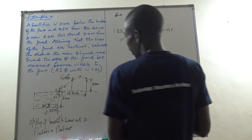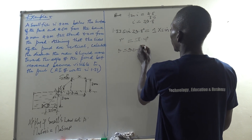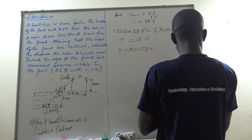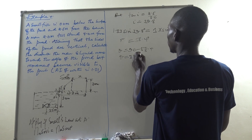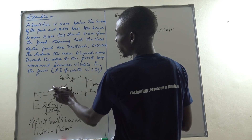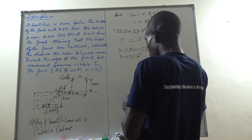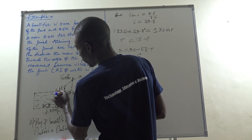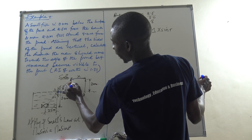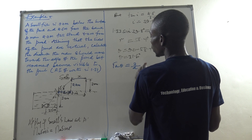Now, if this is angle R at 58.4 degrees, I need the complementary angle theta with respect to the surface. So theta equals 90 minus 58.4, which gives theta equal to 31.6 degrees. With this angle theta, I am now in a position to find the horizontal distance D — the distance from the bank to directly below where the man's head will be at the critical boundary position.